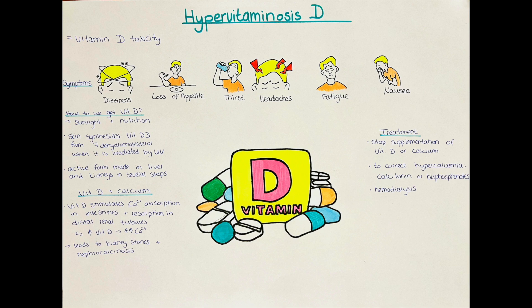Vitamin D has a direct effect on blood calcium levels. Vitamin D stimulates calcium absorption in our intestines as well as calcium resorption in the distal renal tubules. So if vitamin D is very high, calcium levels in the blood will also rise, and if vitamin D is low, calcium levels will fall. Prolonged exposure to very high levels of vitamin D can lead to severe hypercalcemia, which is itself a risk factor for kidney stones and many other diseases.